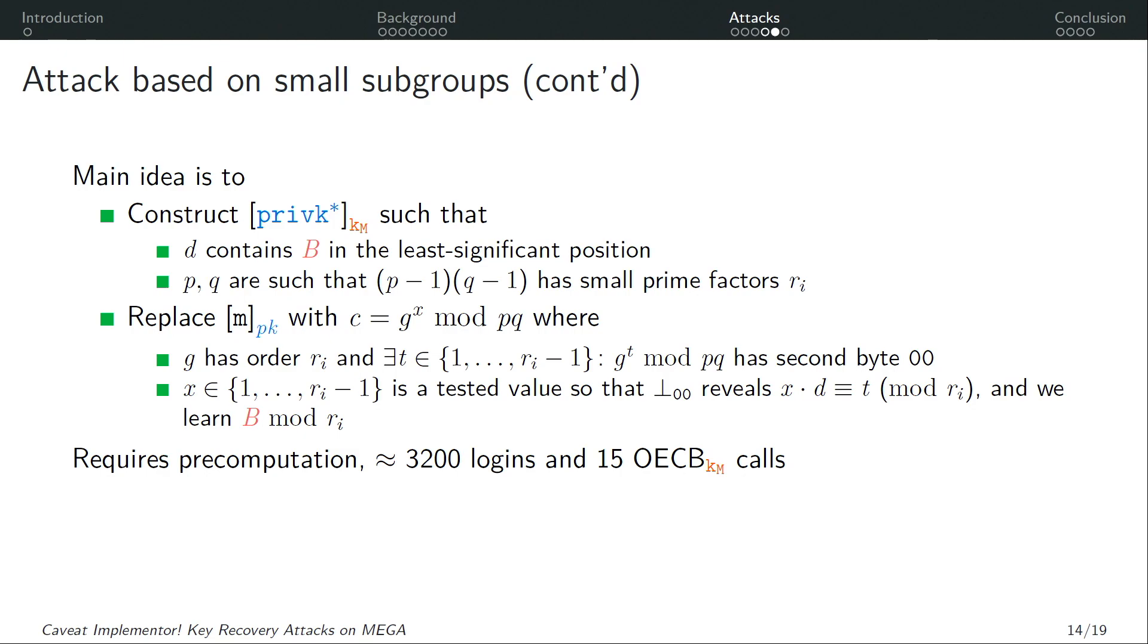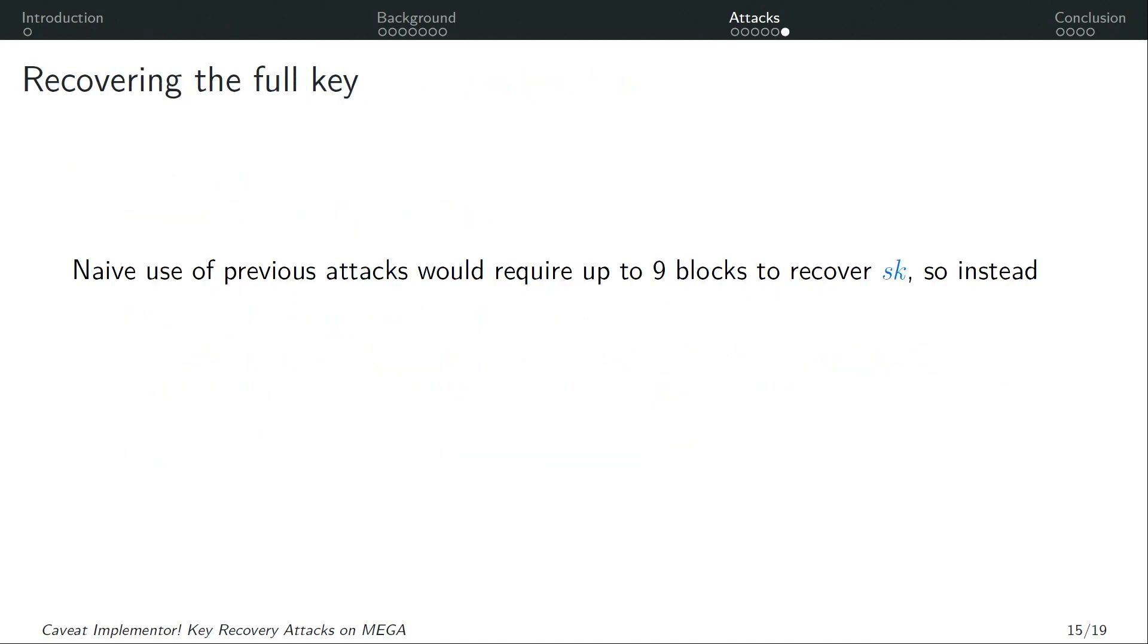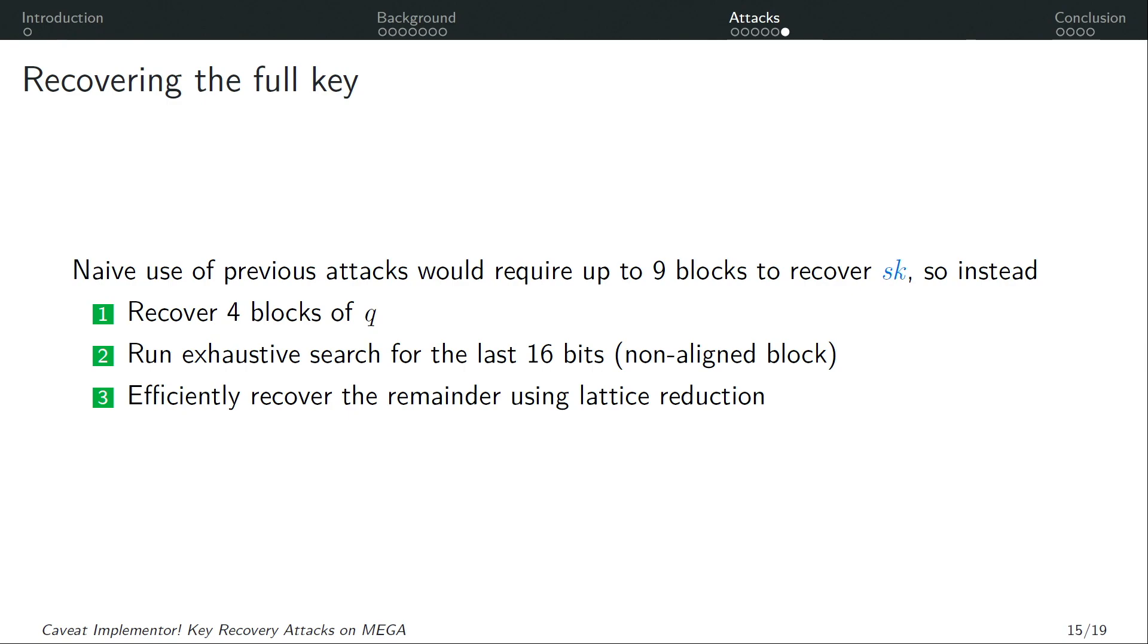And this we can ensure in a pre-computation stage. Then X will be our test value so that whenever we hit this particular error we will learn that X times D is congruent to T modulo ri and so we learn the value of B mod ri and then we can proceed the same as in the first attack. This one requires more pre-computation as well as a larger number of logins but a smaller number of ECB encryption oracle calls. And we include it mainly to demonstrate the fragility of the system because this attack uses a variety of errors that are different from the first one. Now before... So if we had used the previous attacks naively to recover the entire private RSA key we would need to repeat them up to nine times. So instead we recover only four blocks of Q.